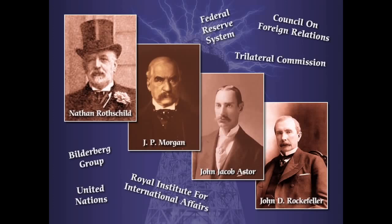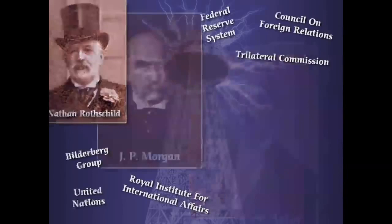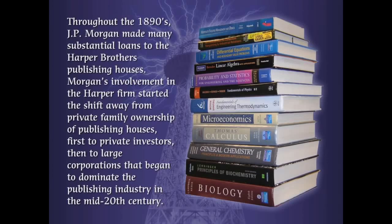We get into possible conspiratorial realms that that may not have actually been an accident. Another gentleman I want to talk about is J.P. Morgan and his influence in the publishing house takeover in America — taking it out of private family ownership and bringing it into corporate ownership. In the modern day, the Rockefeller family are the owners of the publishing houses. Throughout the 1890s, J.P. Morgan made many substantial loans to the Harper Brothers publishing houses, which were the big publishing houses of the time. Morgan's involvement in the Harper firm started the shift away from private family ownership of publishing houses, first to private investors and then to large corporations that began to dominate the publishing industry in the mid-20th century.